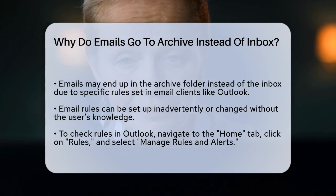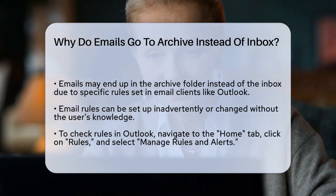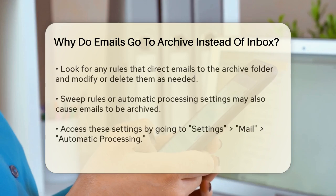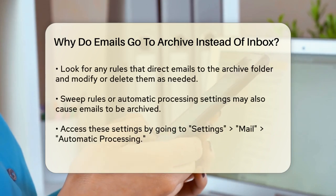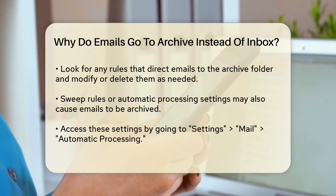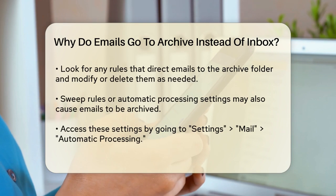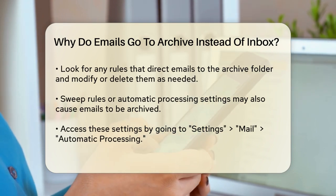For example, in Outlook, you can check the rules by going to the Home tab, clicking on Rules, and then selecting Manage Rules and Alerts. Here, you can see if there are any rules that are directing your emails to the Archive folder instead of your Inbox. Another possibility is that the Sweep Rules or Automatic Processing settings might be configured to move emails to the Archive.